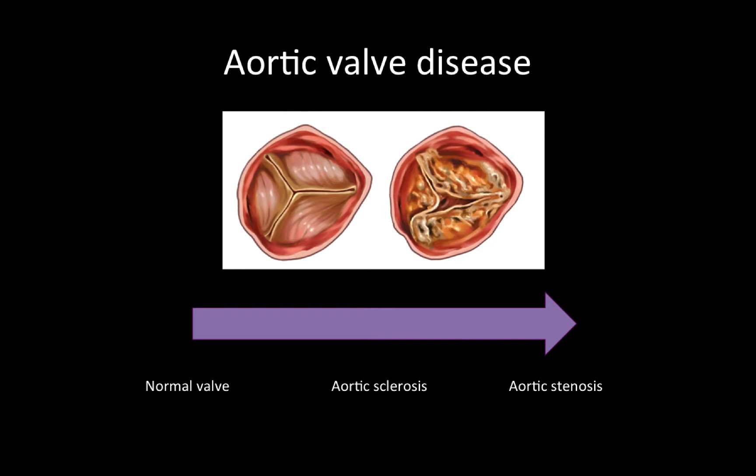Aortic valve disease, of course, exists along a continuum, where aortic sclerosis reflects valve thickening without any actual impairment of valve function. Progression to aortic stenosis, on the other hand, reflects impaired valve function, relative obstruction of the left ventricular outflow tract, and the presence of hemodynamically significant gradients across the aortic valve.